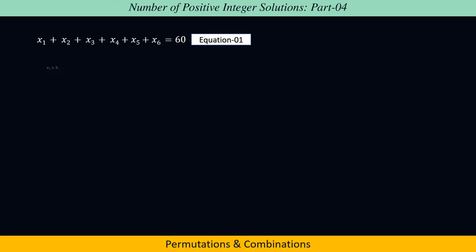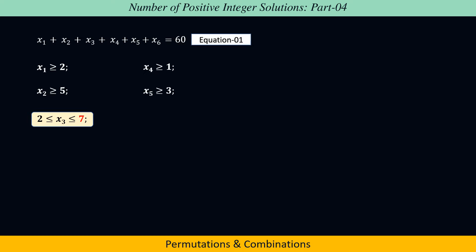where x1 ≥ 2, x2 ≥ 5, x3 ≥ 2 and x3 ≤ 7, x4 ≥ 1, x5 ≥ 3, and x6 ≥ 2.